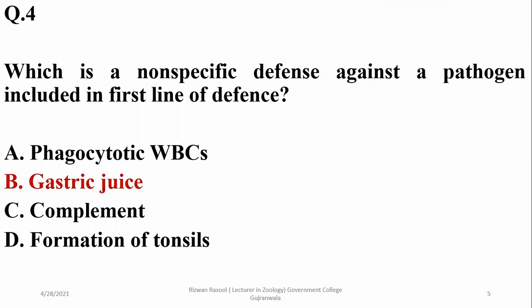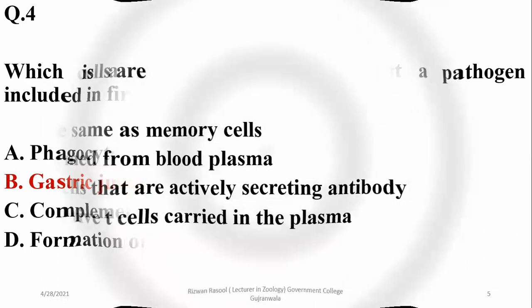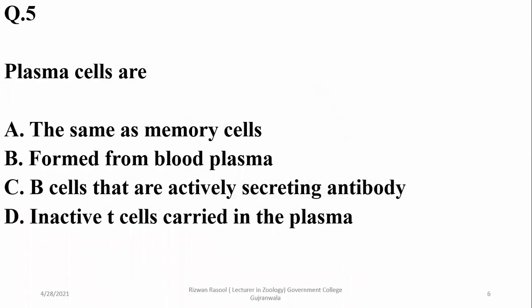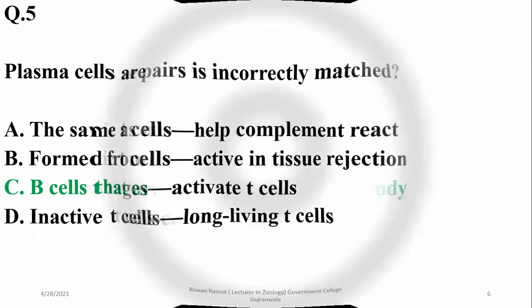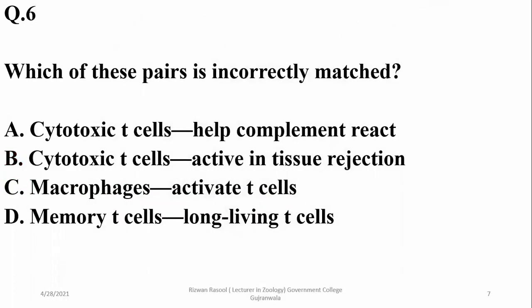Phagocytic white blood cells, complement, inflammation, and tonsils are included in the second line of defense. Plasma cells are actually B cells that are actively secreting antibodies.